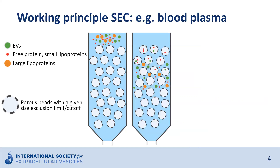As the plasma sample enters the column, proteins and particles that are smaller than the size exclusion limit can enter the inside of the porous beads, and as such they will be delayed. The bigger particles will however go around the beads, and can travel faster through the column.